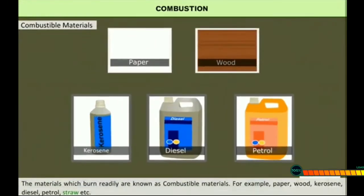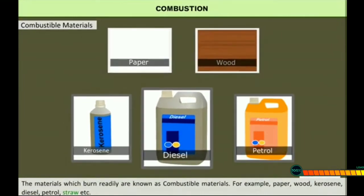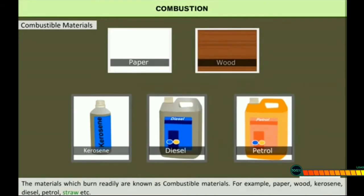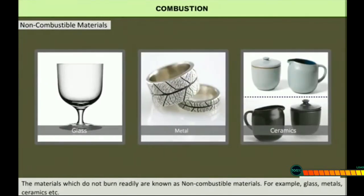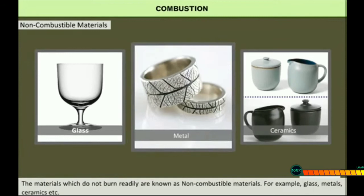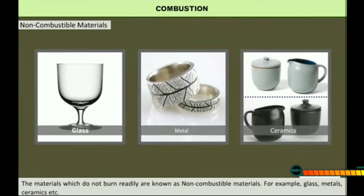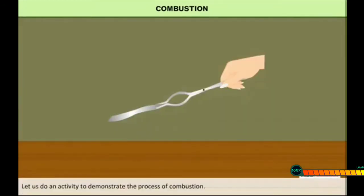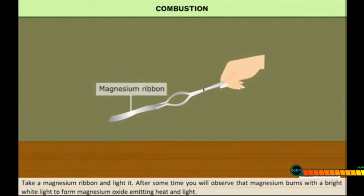There are varieties of materials — some of them are combustible and some are non-combustible. The materials which burn readily are known as combustible materials — for example, paper, wood, kerosene, diesel, petrol, etc. Materials which do not burn readily are known as non-combustible materials — for example, glass, metals, and ceramic things.